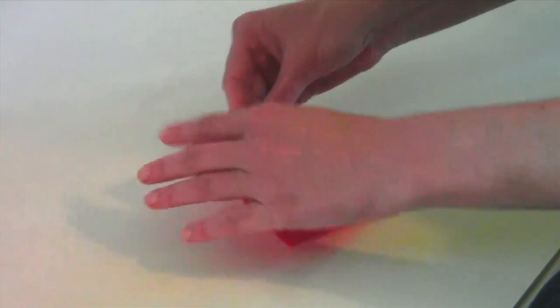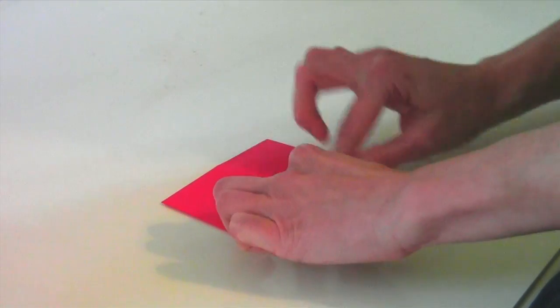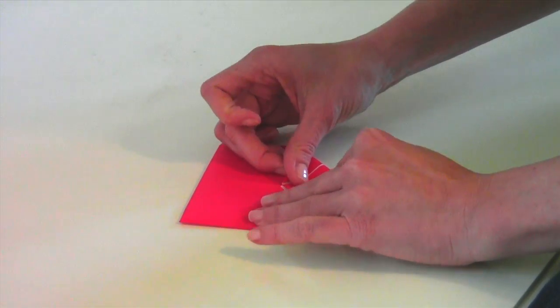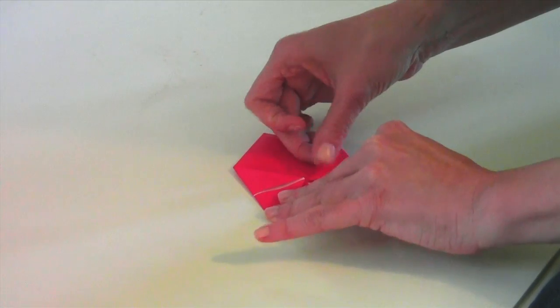You then turn the whole thing over and do exactly the same thing on this side, where you take the corner, the point of the corner, into the middle, and do that for all four sides. Try to get your edges nice and crisp; it'll make it easier to use.